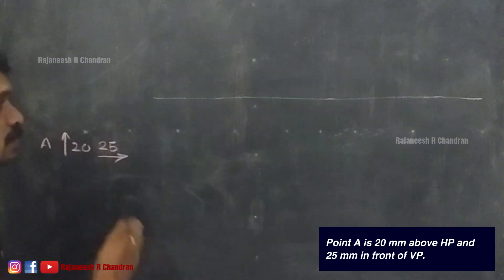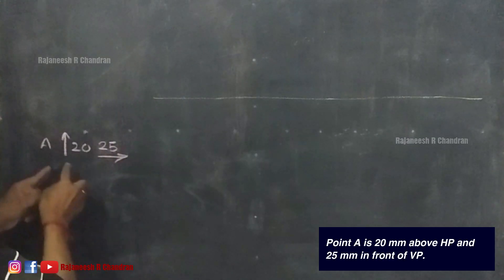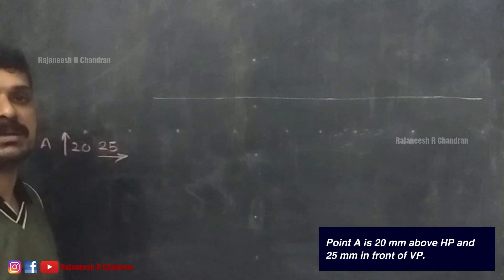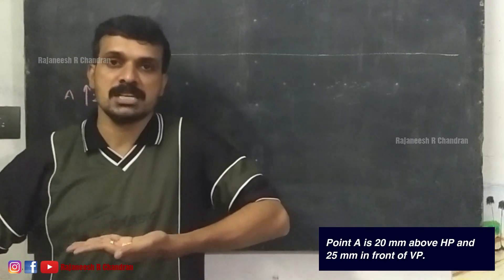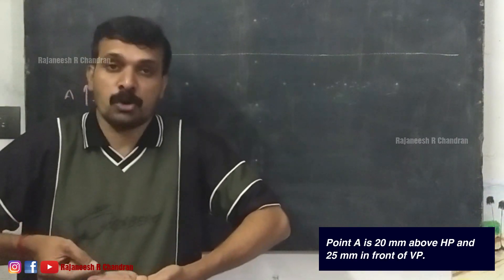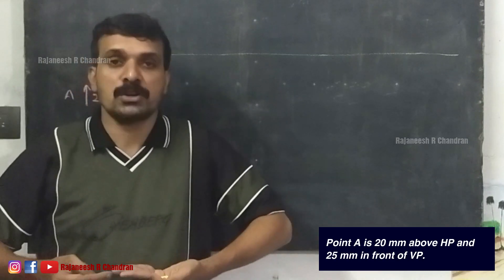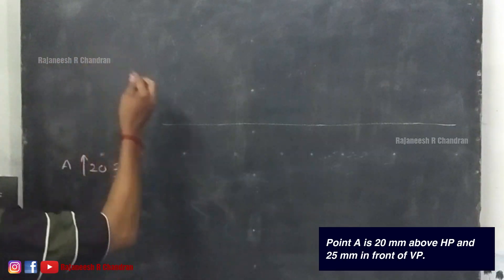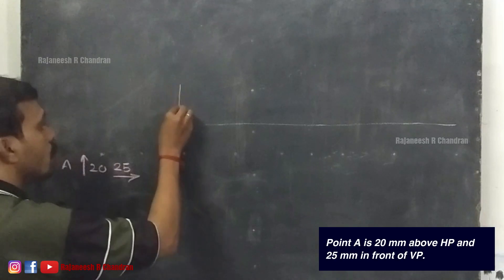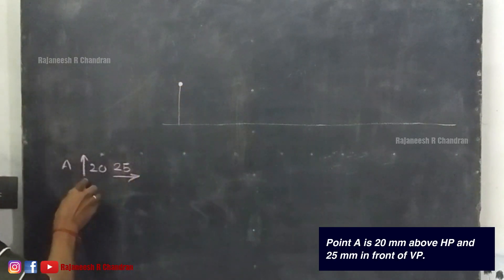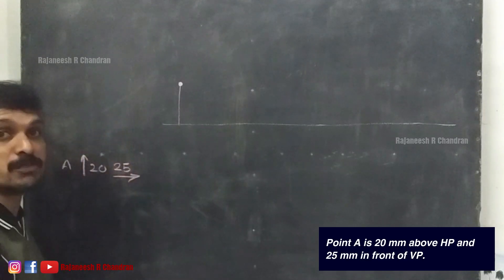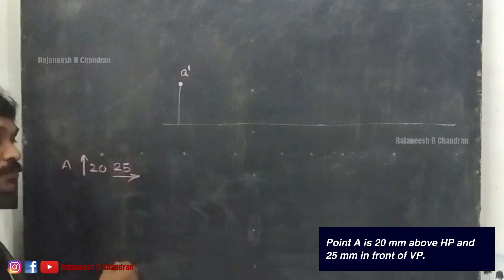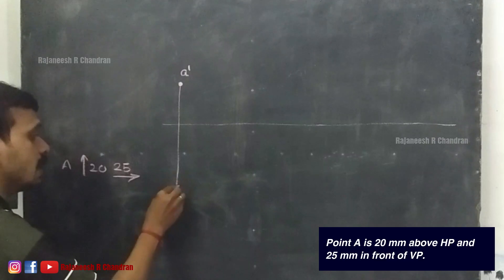The common reference line is the same for all questions. Point A is 20mm above HP — above HP means always above the XY line. In front of VP means always below the XY line. So, 20mm above the XY line: locate this point — that will be A dash, the front view. Then 25mm in front of VP means 25mm below the XY line — name it as A.